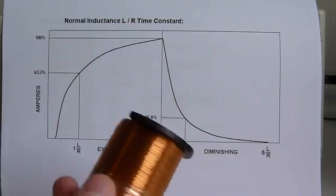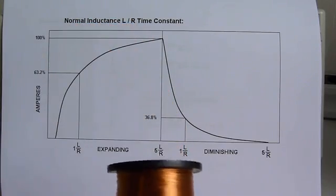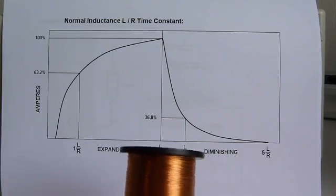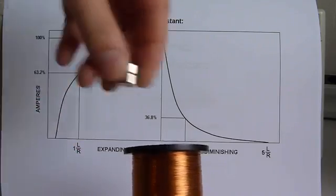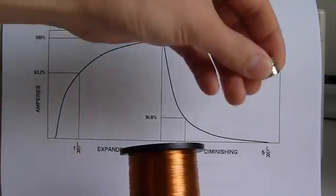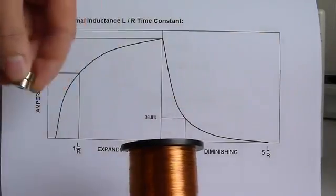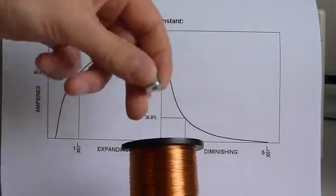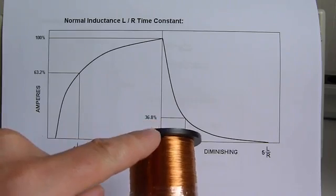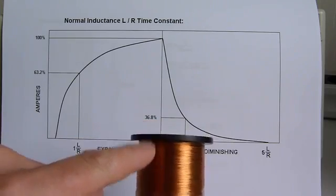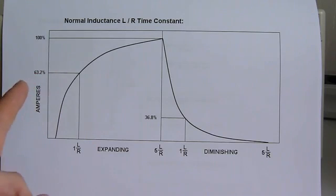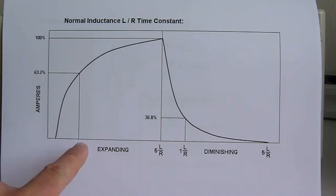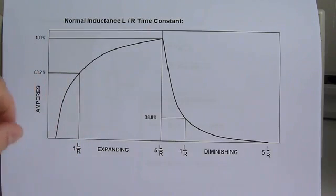What we have done in the regenerative generator example is the exact opposite. We introduce the magnet so that all of a sudden there is a magnetic field, and then all of a sudden it is gone. But in this generator, this action goes so fast that the high-impedance coil isn't able to create its back EMF fast enough. As you can see in this graph, at 1 L-over-R times it is at 63.2%, and when you increase L, the total time constant value is also increased.